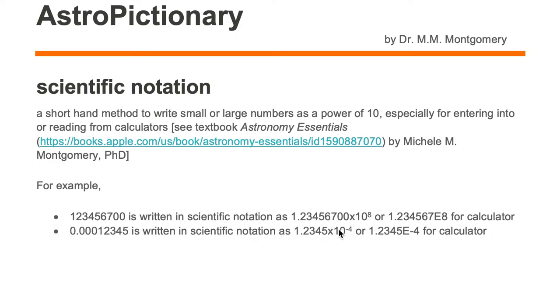We replace the multiply by 10 with the letter E when entering it into the calculator. For the calculator, we enter 1.2345, look for the E or EE key, and hit minus four, where the minus four comes from the 10 to the minus four, or move the decimal point four spots to the left to return back to the original number.